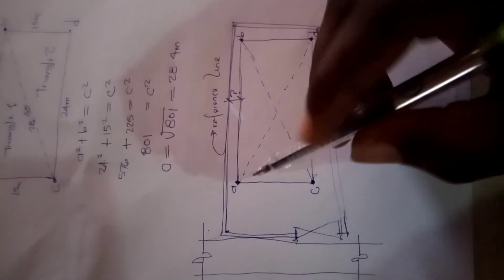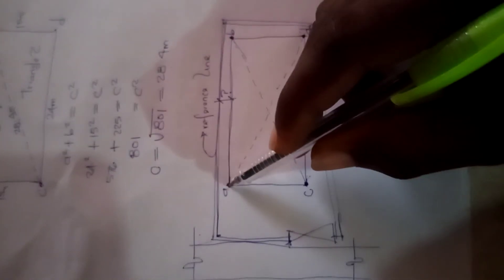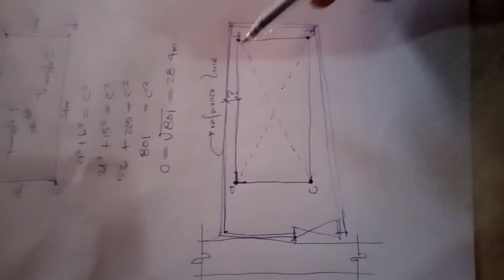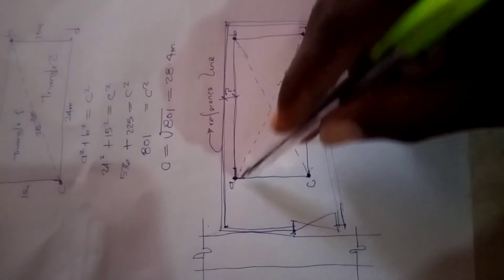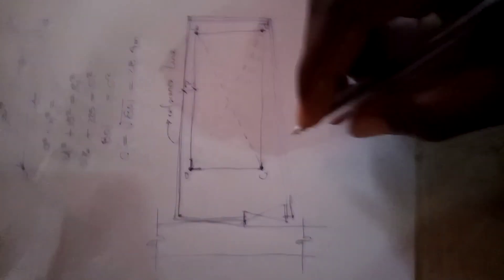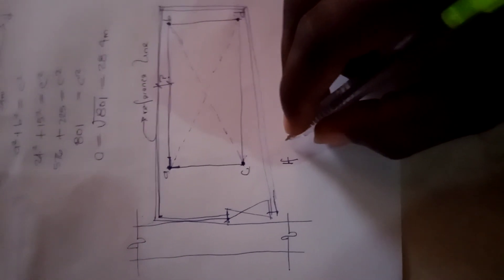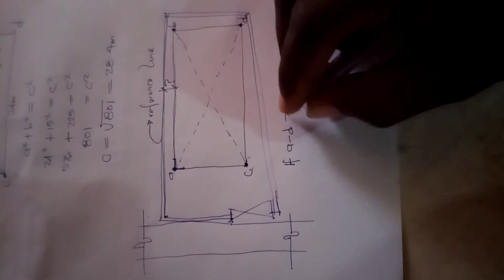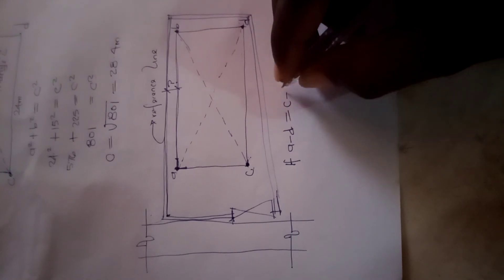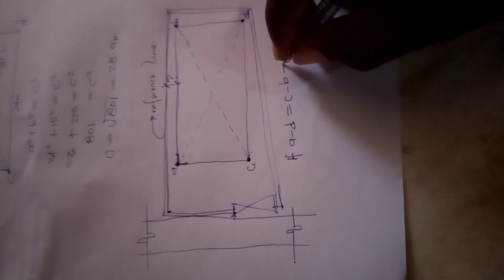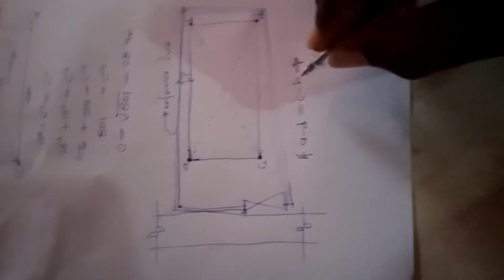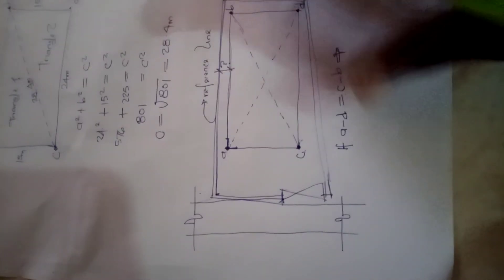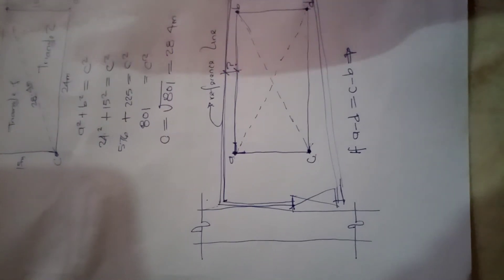To further confirm if this building is perfectly square, you can use a builder's square to check the square of these edges. Another way to confirm is to measure the diagonal length of A to D and the diagonal length of C to B. If the diagonal length of A–D is equal to the diagonal length of C–B, then our measurement is correct. The diagonal lengths must be equal to each other for us to get the exact square of the building.